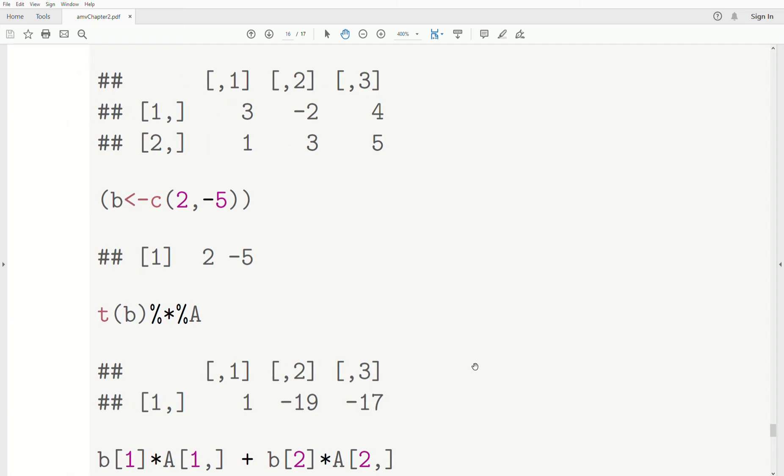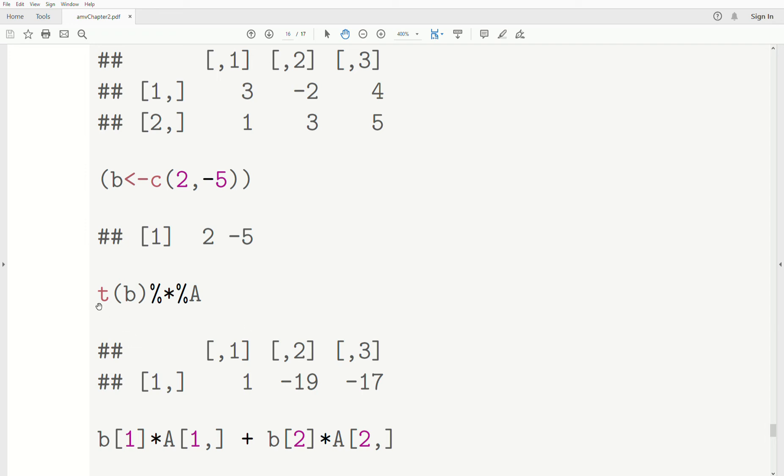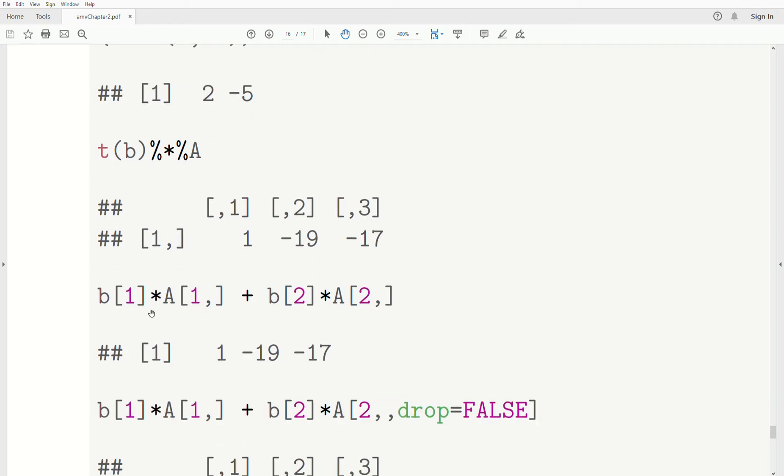Now, to do this in R, there's a matrix A, a vector B. So we take transpose of B times A, and we get this matrix. Or we could take a linear combination of the first component of B times the first row of A, right? It takes first row, all columns, second component of B times the second row of A, all columns, and then this is the answer.